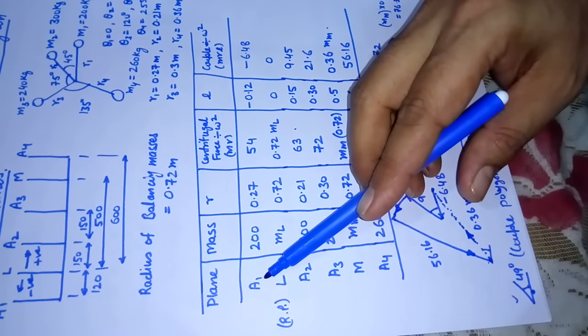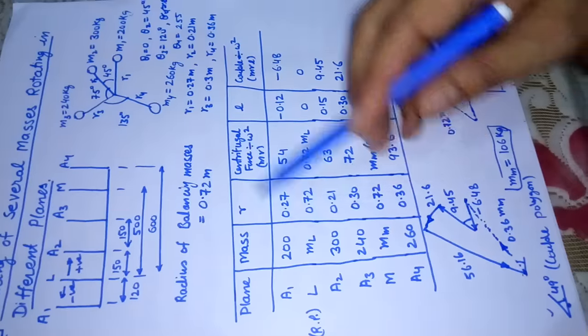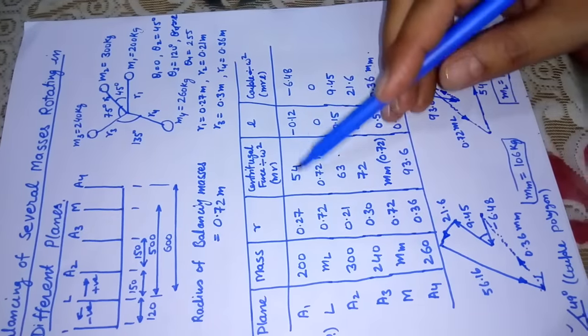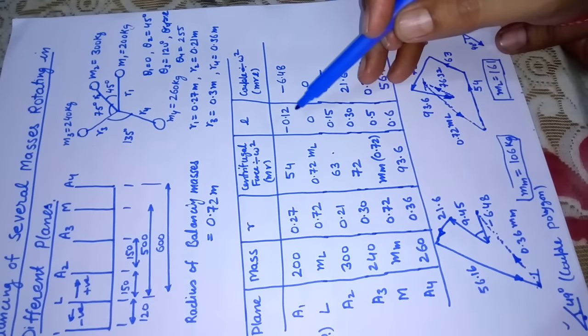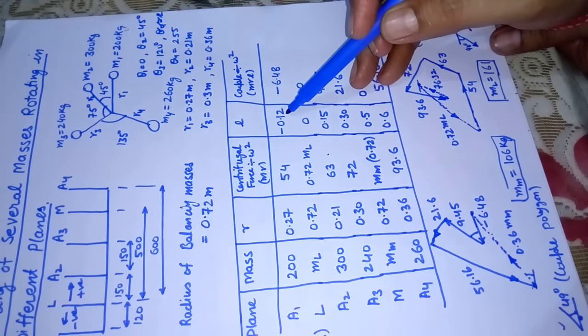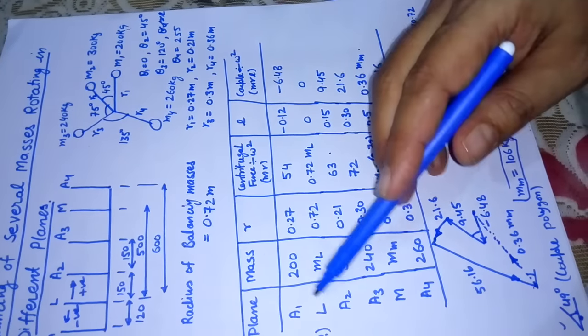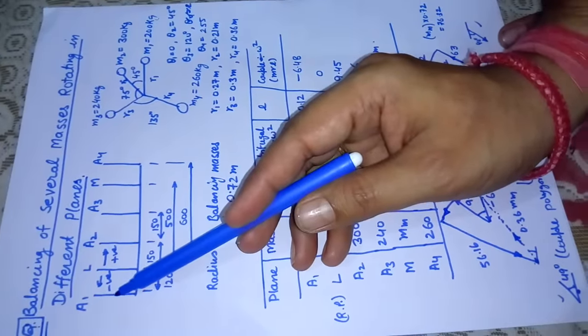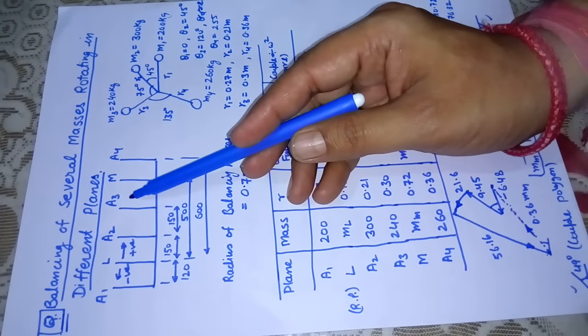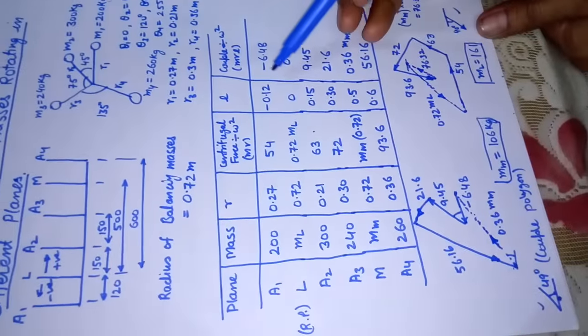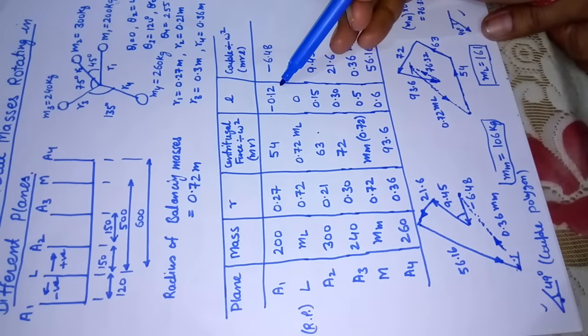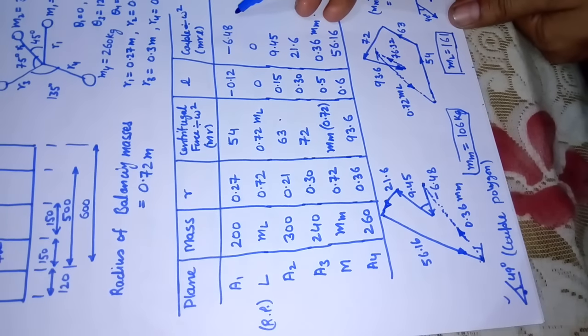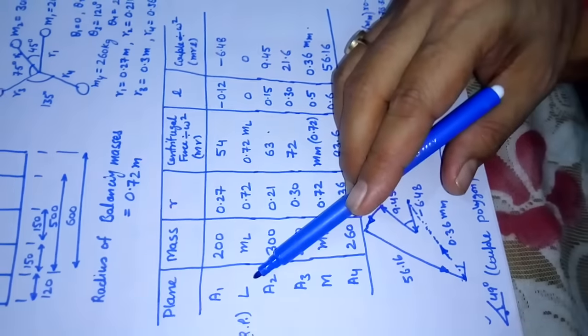For plane a1, we have mass of 200, that is m1 is 200. It is at r1, the distance is 0.25. Then we multiply these two to obtain mr. The location of plane a1 with respect to reference plane l is 120 towards this side, so before the reference plane, toward the left, it is taken as negative. Towards the right of reference plane it is taken as positive distance. So a1 will be at minus 0.12 meter, that is 120 mm. When we multiply, mrl will get this value, that is the couple.